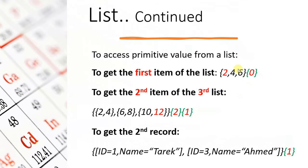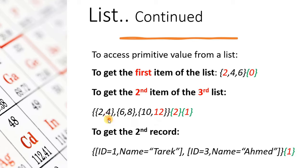If you want to access a value from a list, you need to use the position of the item, written inside curly braces. In the first example we have three items: two, four, and six. To access the first item (number two) we type zero inside curly brackets, because Power Query is zero-based. For a list of lists, we have three sub-lists: {2,4}, {6,8}, and {10,12}, all enclosed inside one big list.